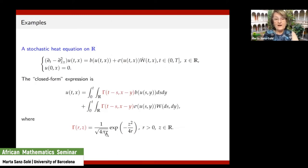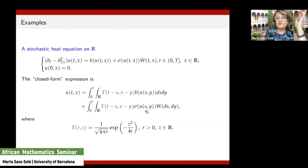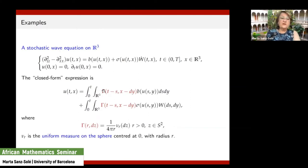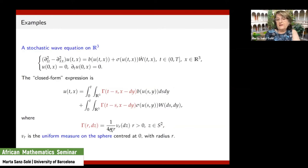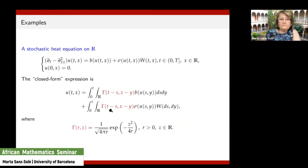For the stochastic heat equation on the whole line, the fundamental solution is well known — it is the density of a Gaussian random variable with variance 2r where r is time. This term is a convolution in time and space, as in classical analysis. The trouble is that instead of an integral with respect to Lebesgue measure, I have an integral with respect to the noise. For the wave equation in dimension three, there is also a closed form expression, but things become more involved: the fundamental solution is a measure — the uniform measure on the sphere centered at zero with radius r, normalized by 1/r.